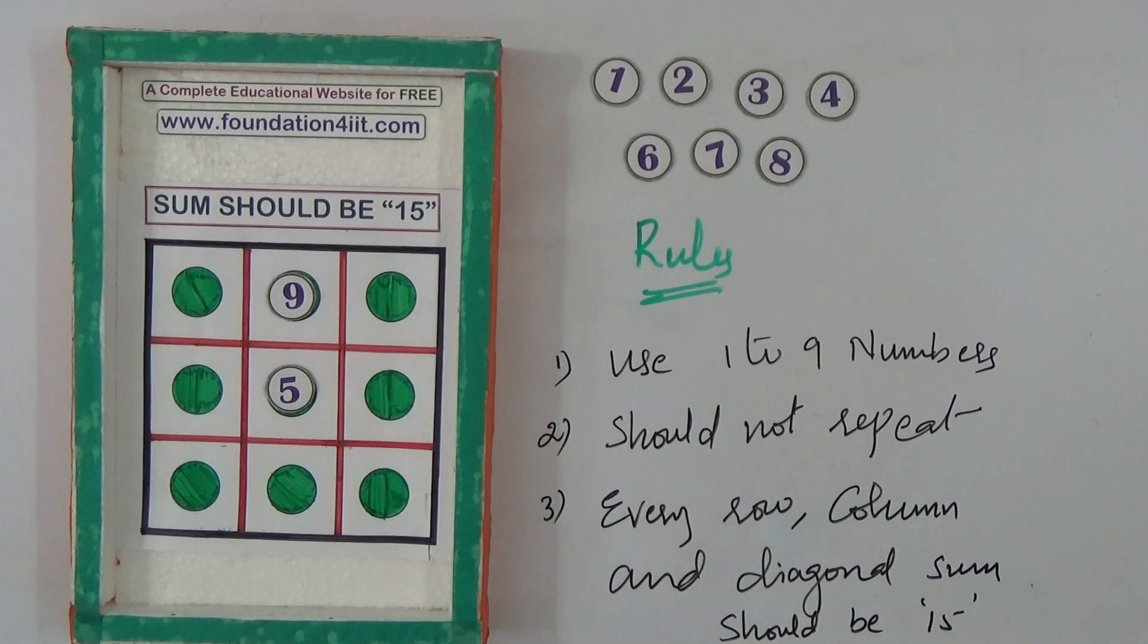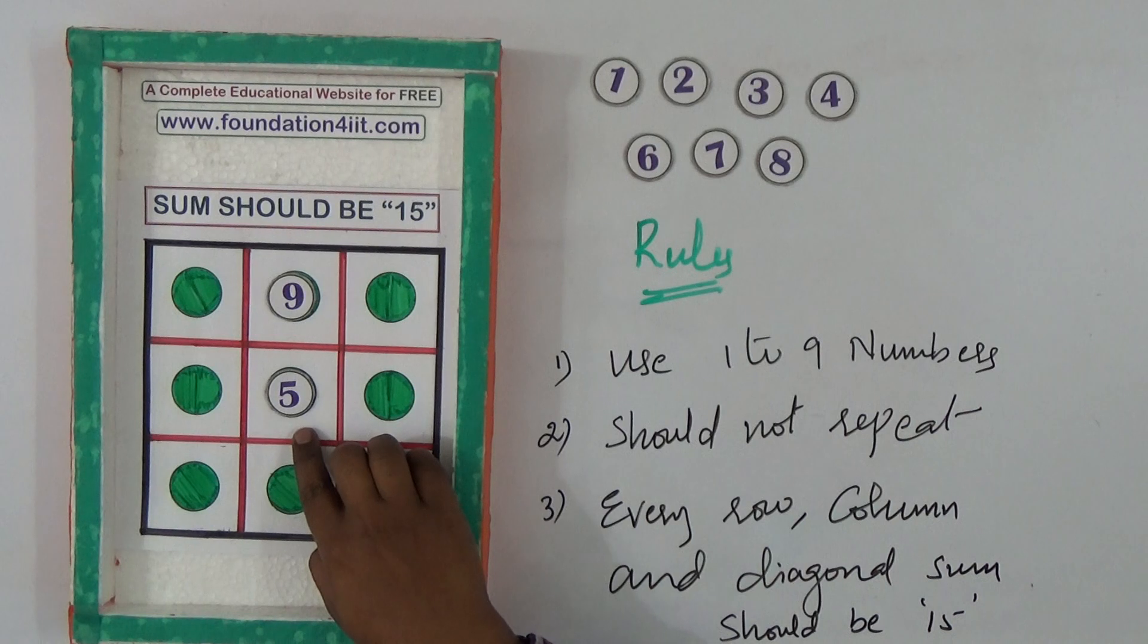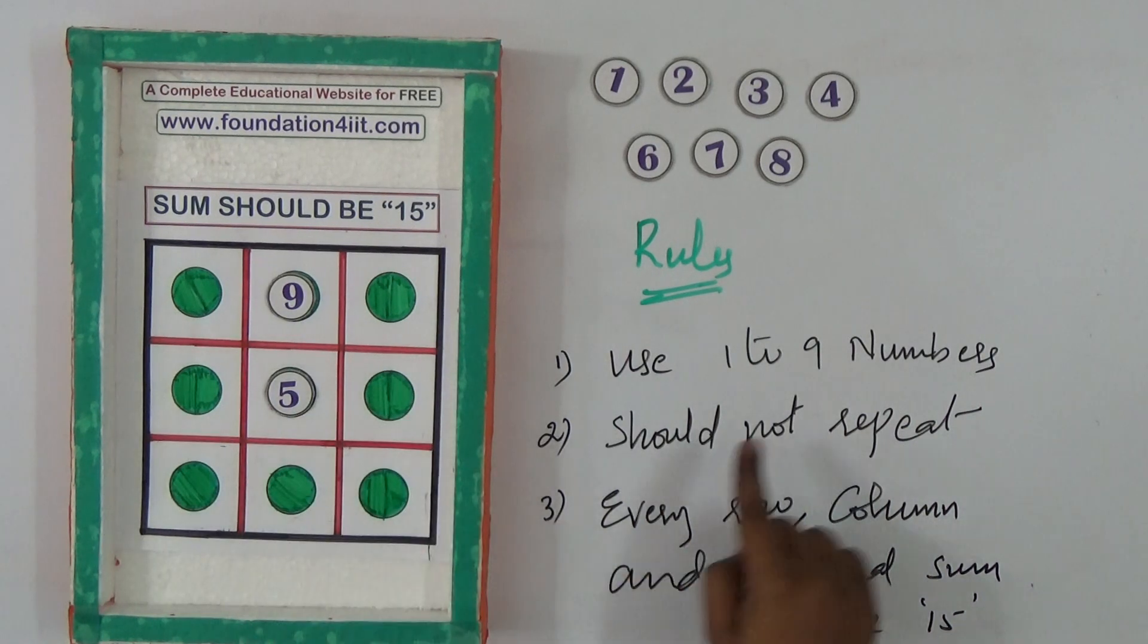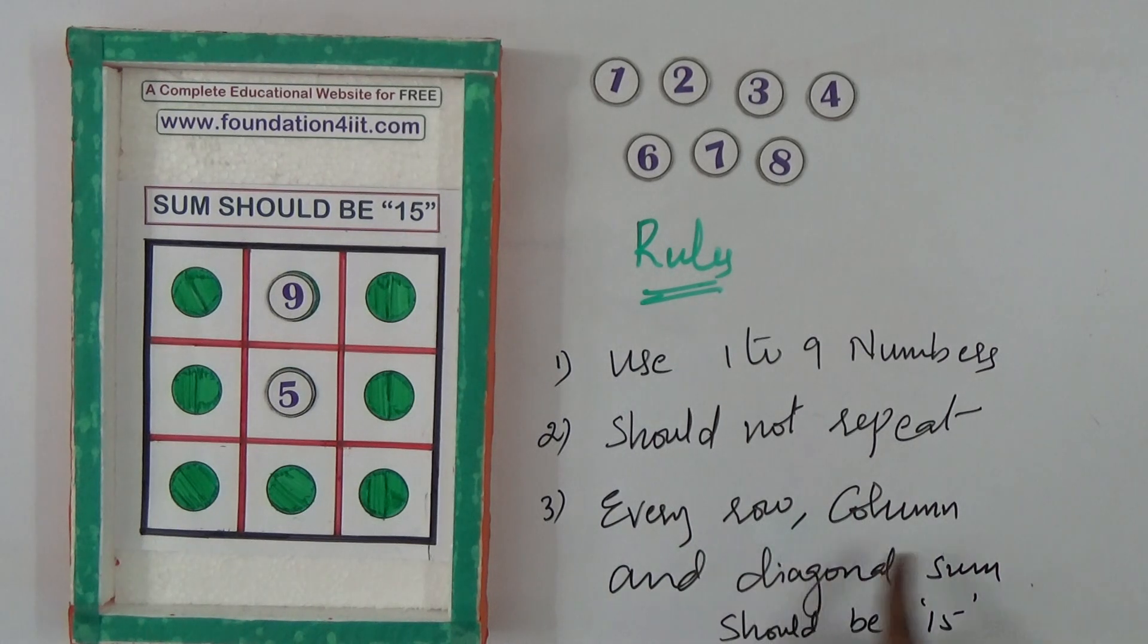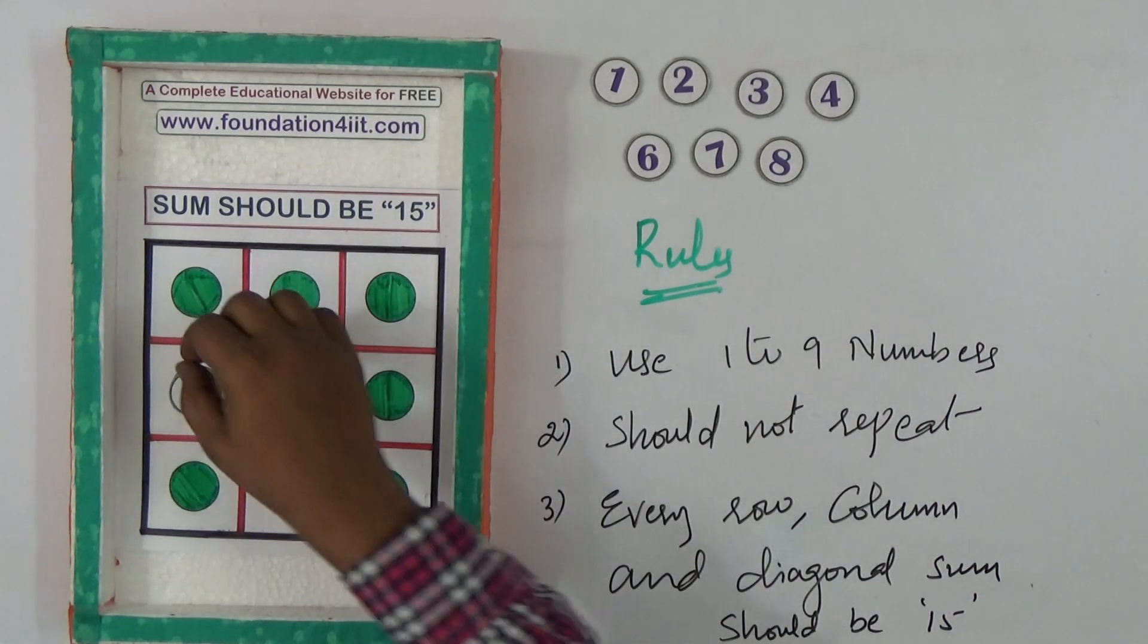Just you can give the clue, 5 should be in the center. That's the first clue, because without 5 in the center you'll never get sum of 15 for rows, columns, and diagonals. If you observe 9, you can take because every row and column should be 15.